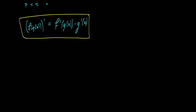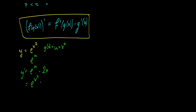We'll take that same example: y is equal to e to the x squared. What we do is we derive the outside function, then derive the inside function. We let u equal x squared, so we have e to the u. Taking the derivative, y prime is equal to e to the u, and then we derive u — which is x squared — giving us g prime of x equal to 2x. So y prime is equal to e to the x squared times 2x.